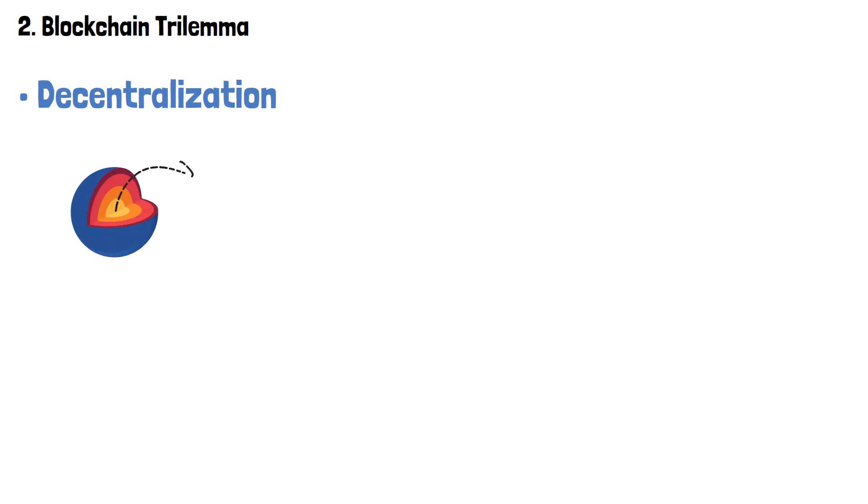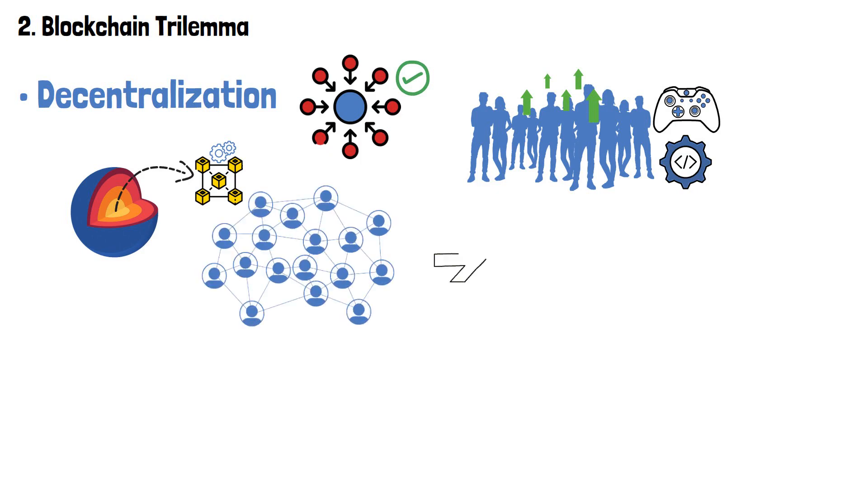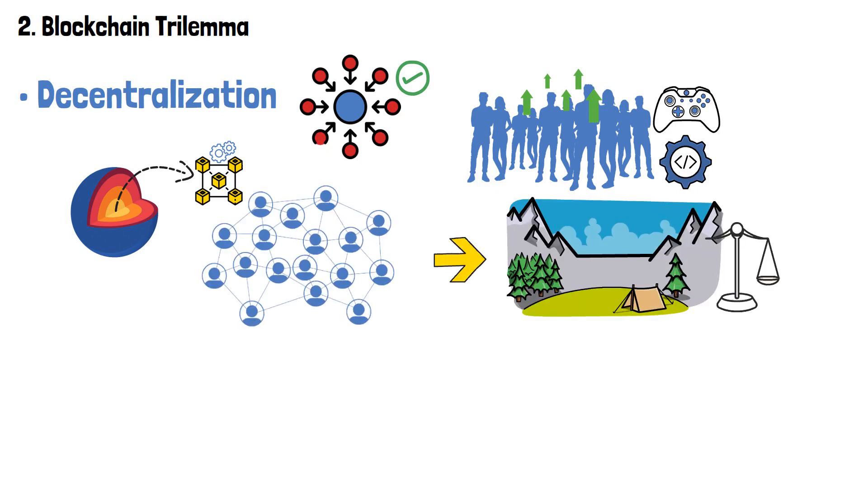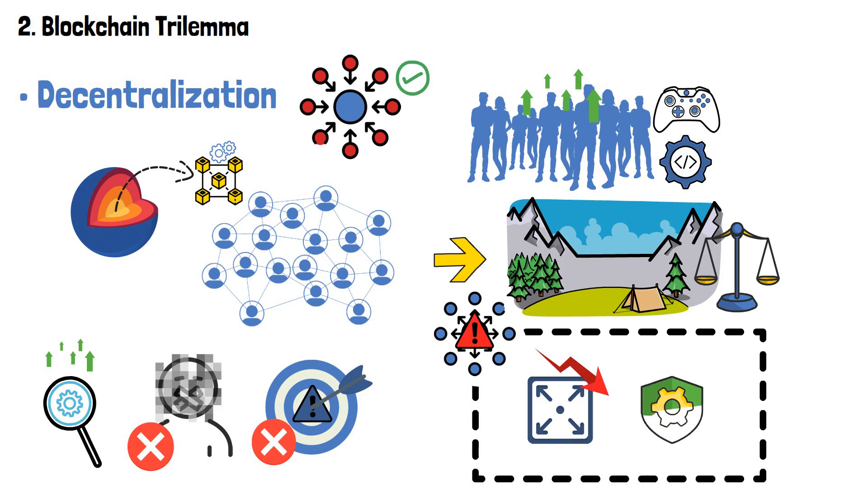Lastly, decentralization is the essence of blockchain tech, liberating it from centralized authorities and empowering participants with control and autonomy. A decentralized network is like a vibrant ecosystem where power is distributed among its users. It fosters transparency, censorship resistance, and resilience against single points of failure. Yet, achieving true decentralization can pose challenges, as it may hamper scalability or introduce vulnerabilities.